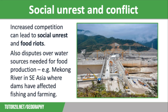Our third impact is social unrest and conflict. The increased competition and subsequent rising prices can lead to social unrest and food riots, where people react to food shortages as they become desperate for resources. Food riots are not uncommon in Africa, particularly in the northern regions and the Middle East. Food insecurity can also lead to disputes over water sources needed for food production, particularly in terms of rivers flowing through several countries who cannot agree on how to use the water. The River Nile is a good example of this.